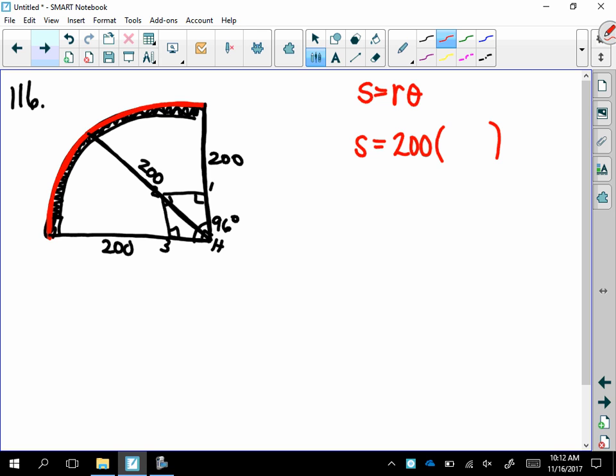And theta, as we said yesterday when we talked about this formula, theta has to be in radians. So I want to say 96, and I'm going to multiply by pi over 180. And what does that reduce to? 8 pi over 15. So when we calculate all that out, then that's going to be what we get for the length of that outfield fence, which ends up being about 335.1 feet.